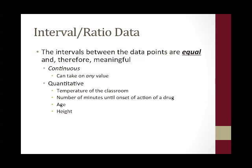Interval ratio data is a lot more flexible. The intervals between the data points are equal and therefore meaningful. Interval ratio data is continuous, meaning it can take on any value, and it's quantitative. Examples include temperature, number of minutes, age, and height.